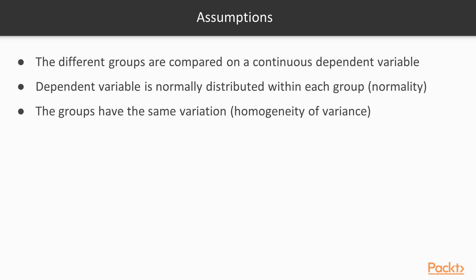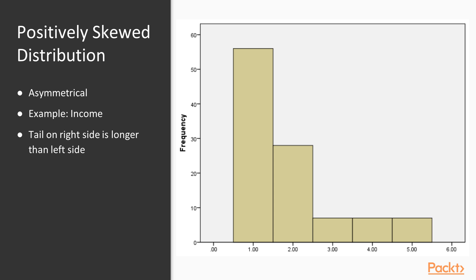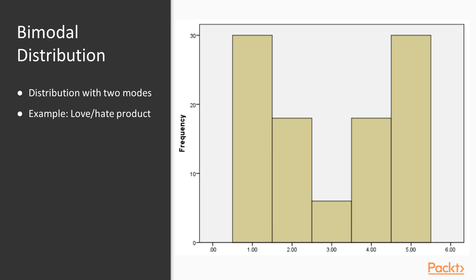Now let's talk about the assumptions of a one-way ANOVA. First, the groups must be compared on a continuous dependent variable, and we need at least two groups. Second, the dependent variable must be normally distributed within each group — the assumption of normality, the same as with an independent samples t-test. Skewed distributions are not a major problem as long as sample size is at least 30 per group, and ideally all groups share similar distributional shapes. A bimodal distribution, however, definitely violates the normality assumption and would require a different test.